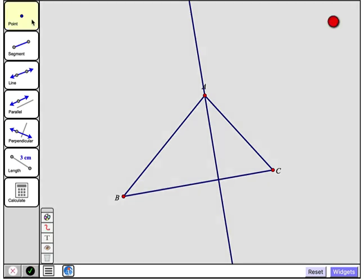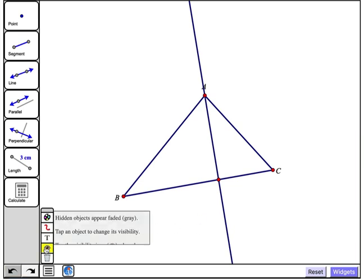So let's mark that intersection point using the point tool, that's right here. And before I construct my segment, let's hide, using the visibility widget, this line. So when I tap the widget, I now can tap the objects that I'd like to hide, which in this case is just the line.